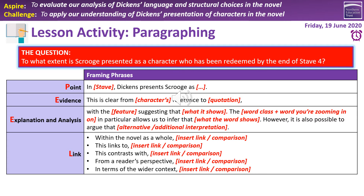The fourth part of the PEEL structure is the Link. Link your idea to somewhere else in the text — how does it fit within the wider structure, or contrast with another point? Or link it to the reader's point of view: how does it shape how we see the character? You can also link to wider context. Aim for two to three PEEL paragraphs; one is acceptable if substantial thought has gone into it.